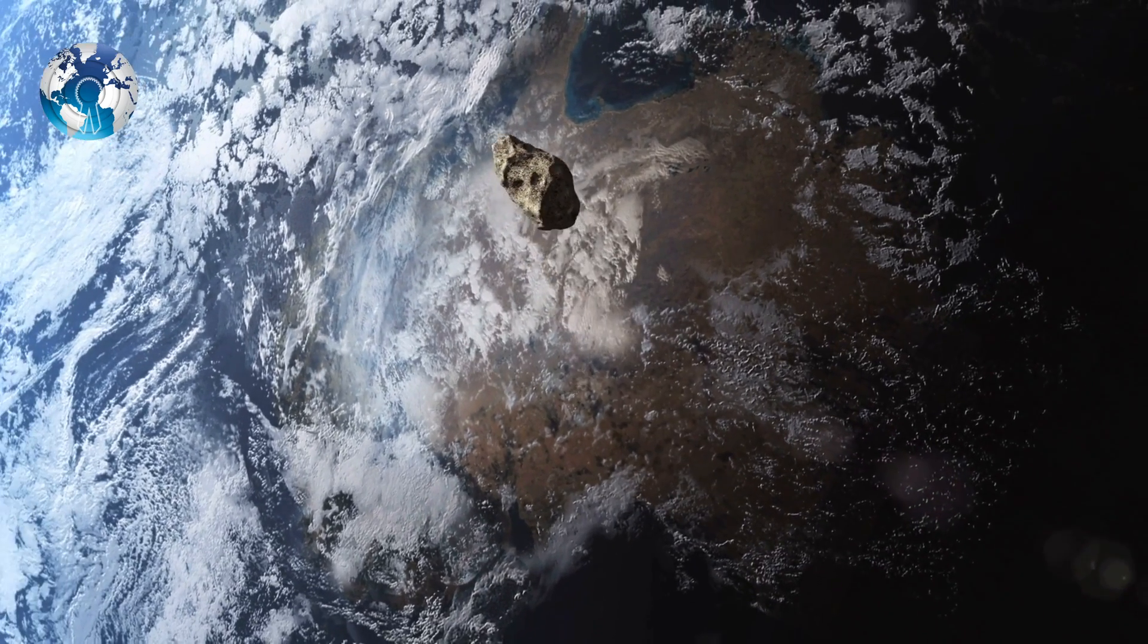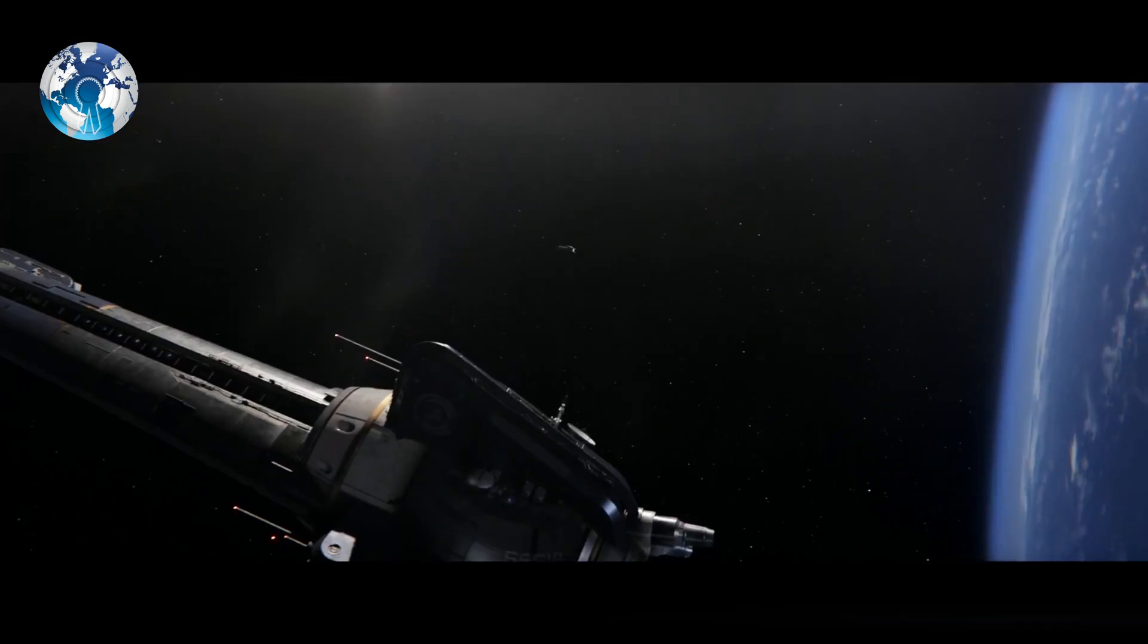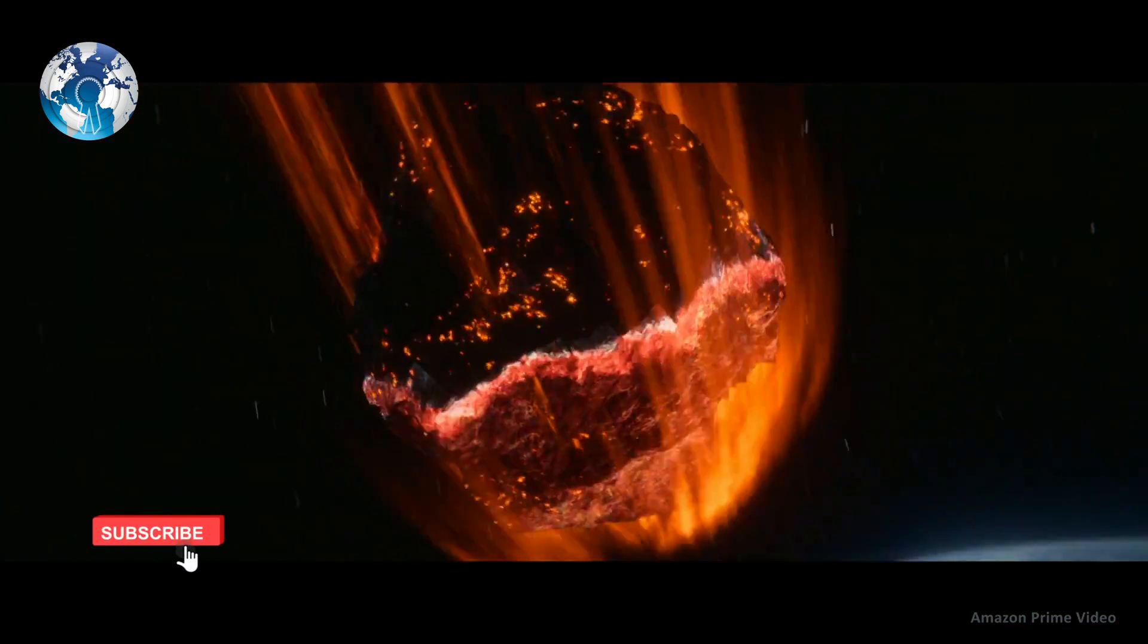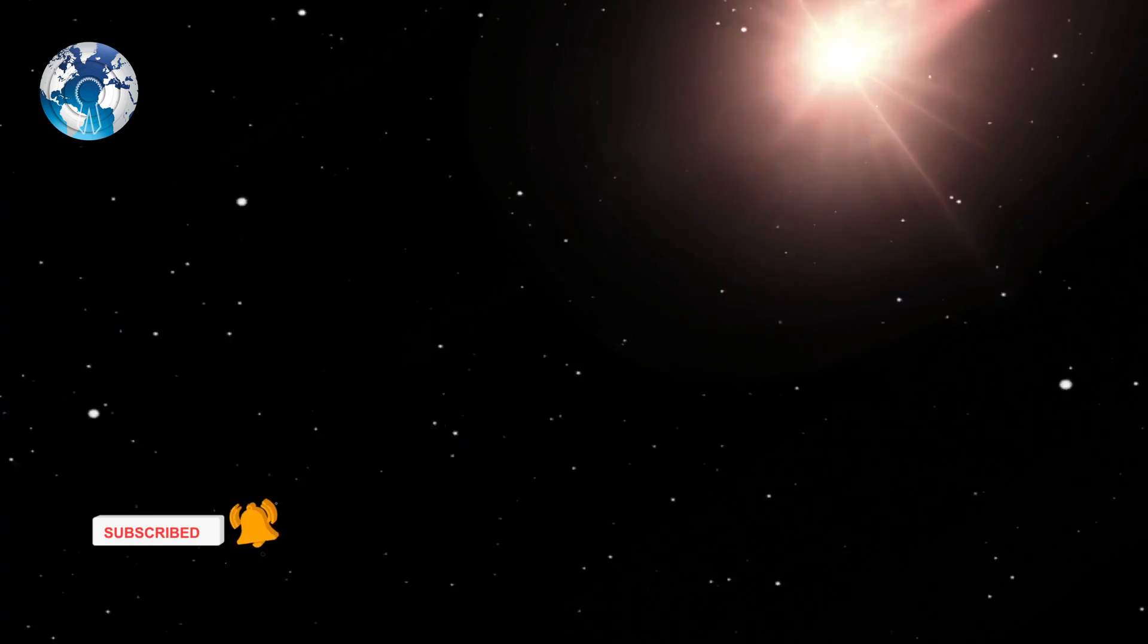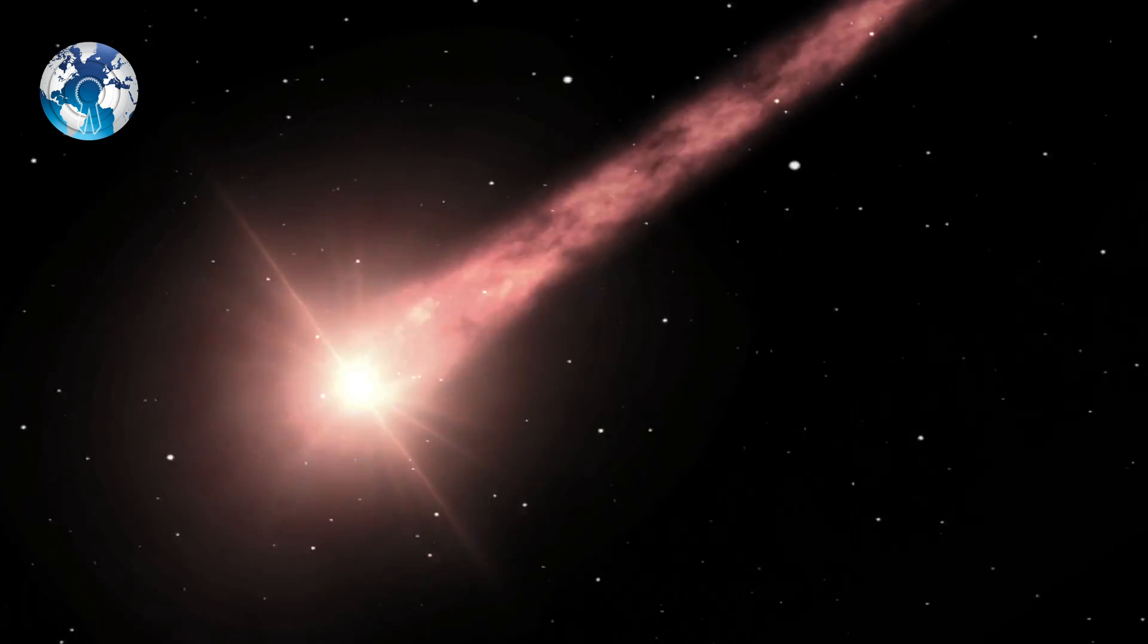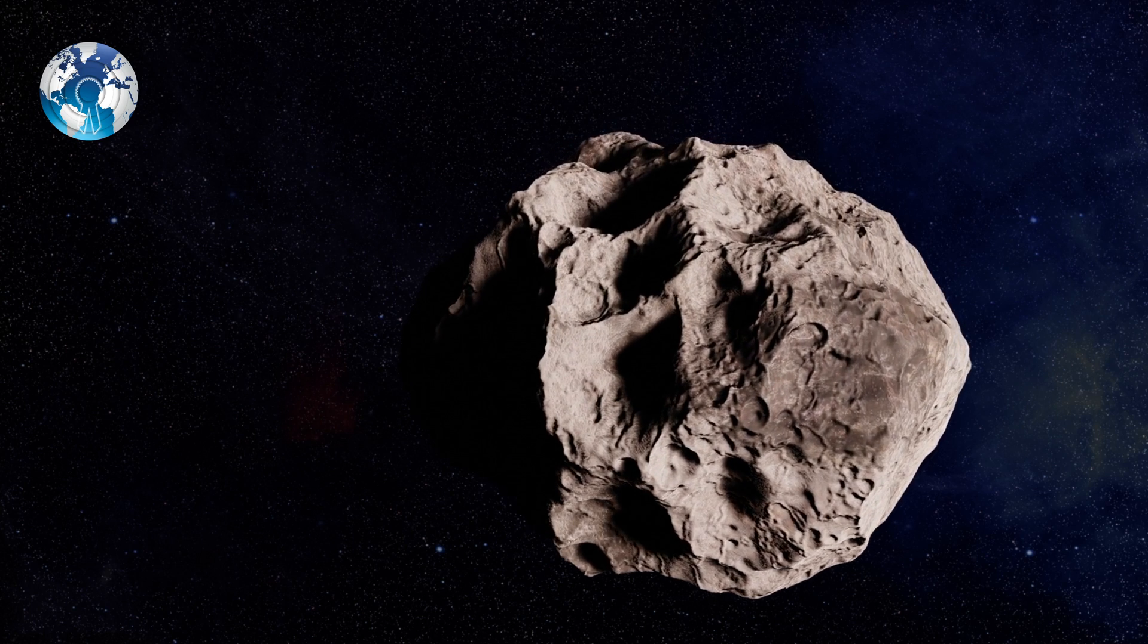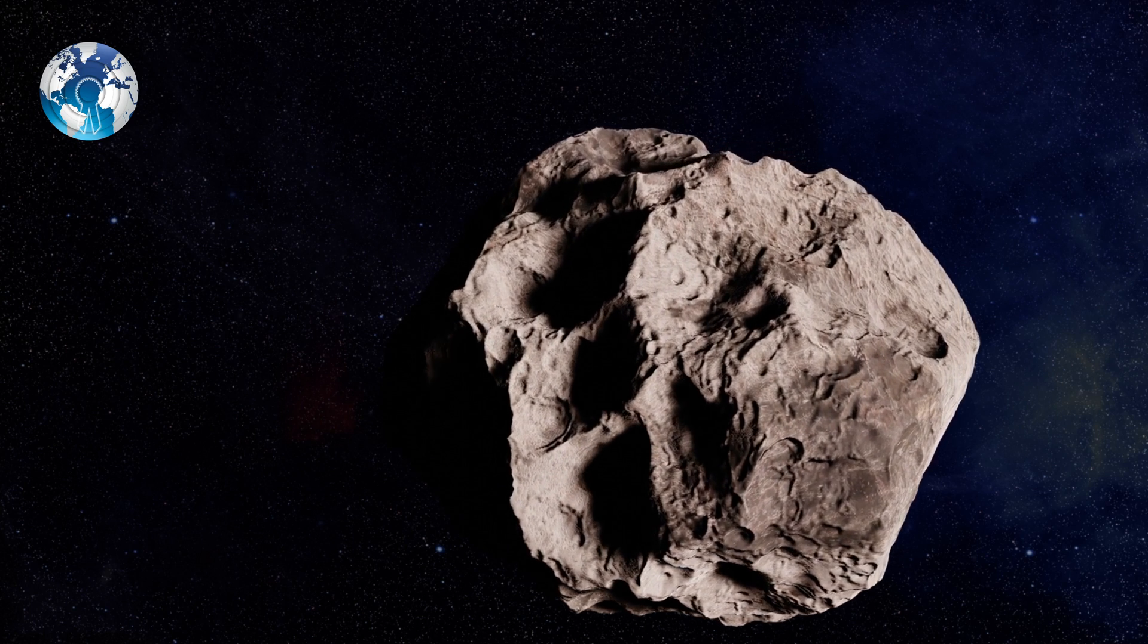The asteroid the size of Boeing 747 cruised by the Earth this week while scientists remained completely unaware of it. NASA has called the giant asteroid 2021SG and confirmed it had the wingspan of a 747 Boeing and was around half the size of the Great Pyramid of Giza.